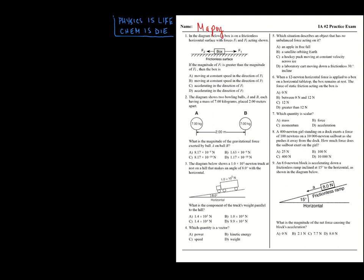Number one: we have a box with two forces F1 and F2 on opposing sides. F1 is greater in magnitude than F2 — we can even see that the arrow is longer on F1. So if that's greater on one side, it's going to accelerate in the direction of the bigger side. That's choice C: accelerating in the direction of F1.